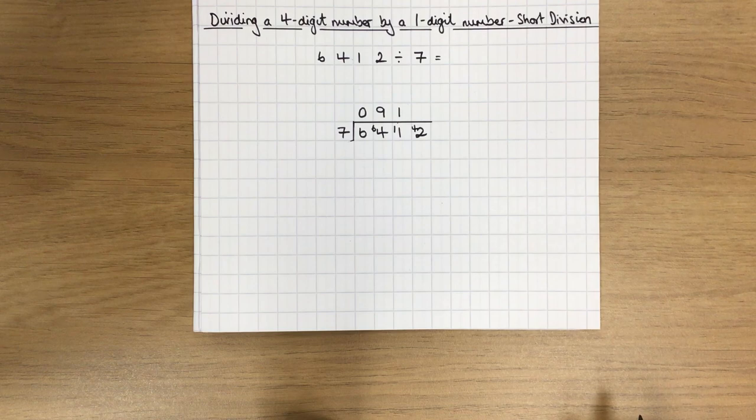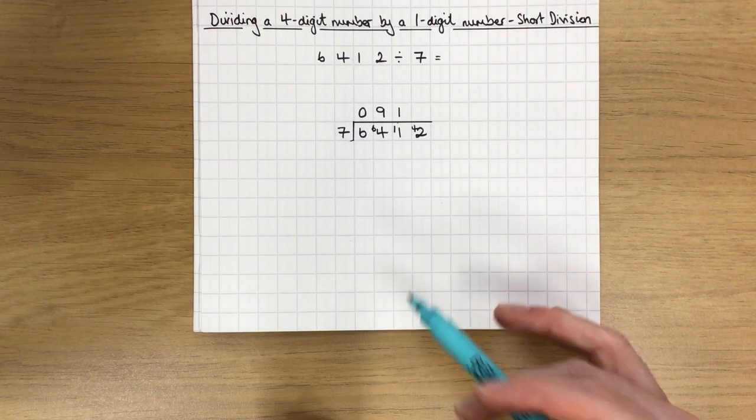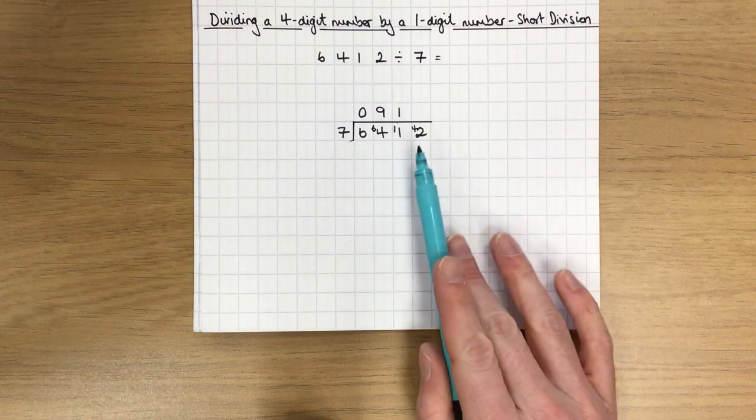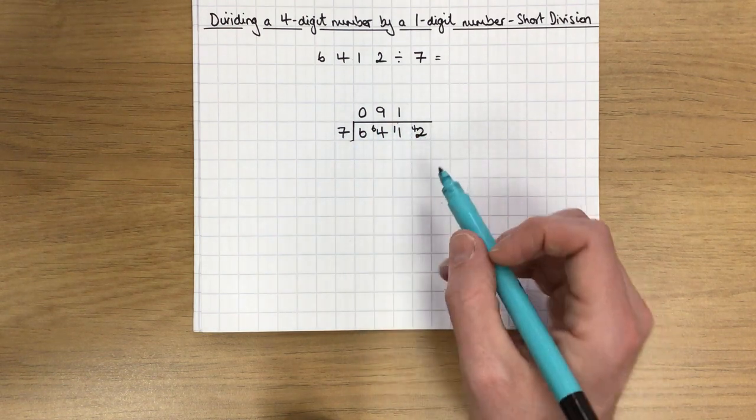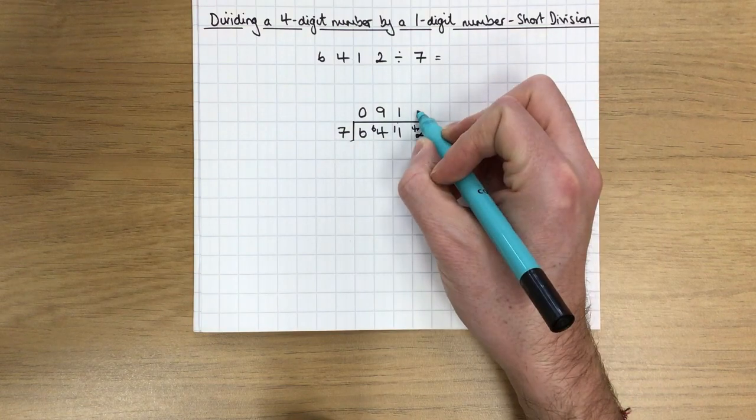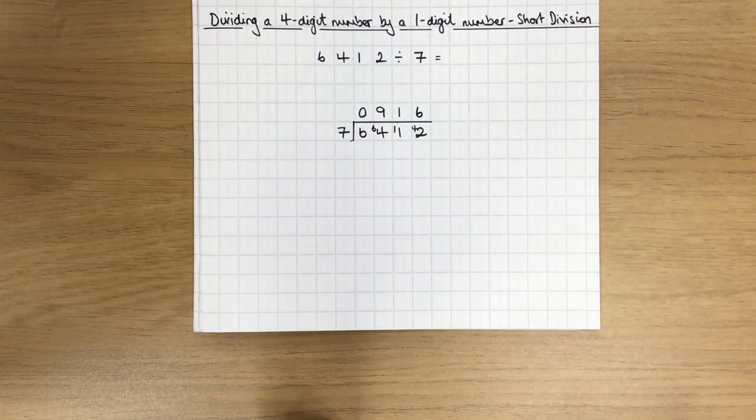7 into 42. Using my 7 times table knowledge, I know that 42 is a multiple of 7. I know that 7 is a factor of 42. I know that 42 divided by 7 is 6, and it goes in perfectly.